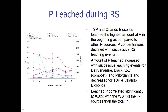During the rainfall simulations, total soluble P from Orlando biosolids leached the highest amount of P in the beginning compared to other P sources. P concentrations declined with successive rainfall simulation and leaching events. The amount of P leached increased with successive leaching events for dairy manure and black cow compost, while it actually decreased for the two biosolids. Importantly, leached P correlated significantly with the water-soluble P of the P sources rather than with total P — it is the releasable P, such as water-extractable P, that matters for environmental impact.